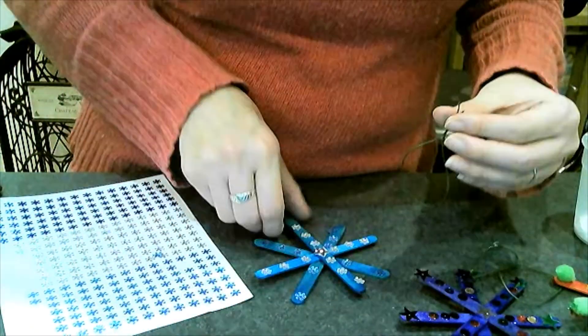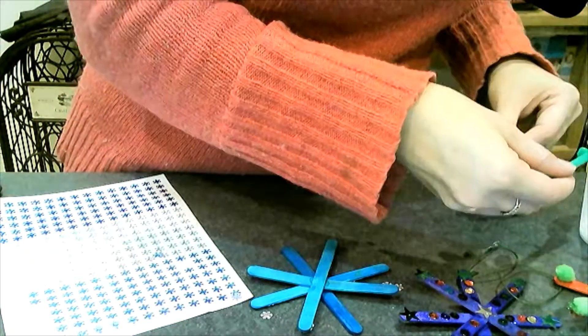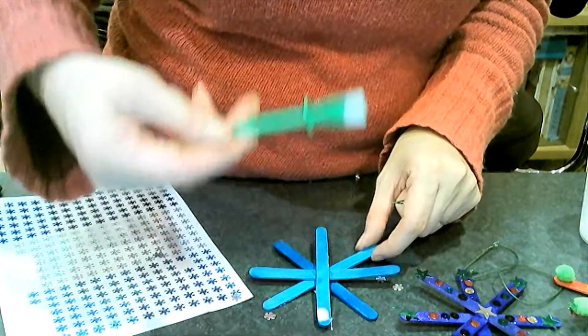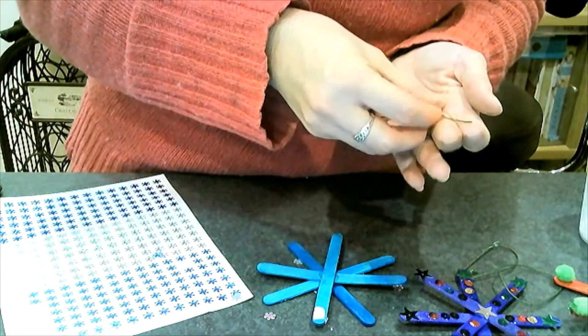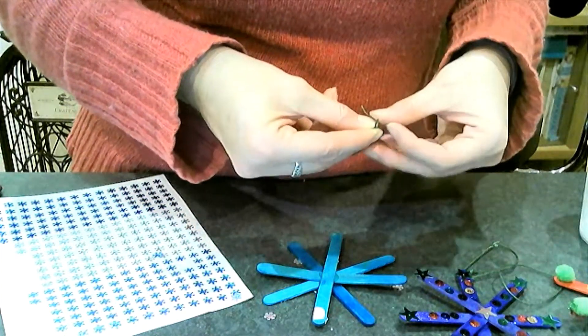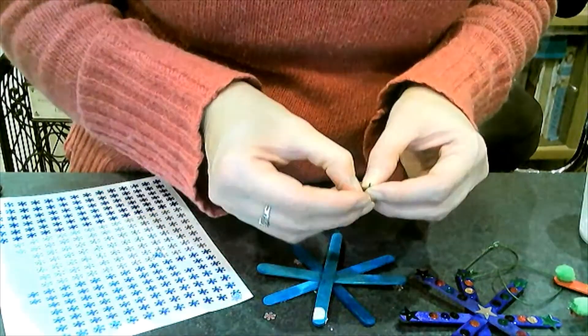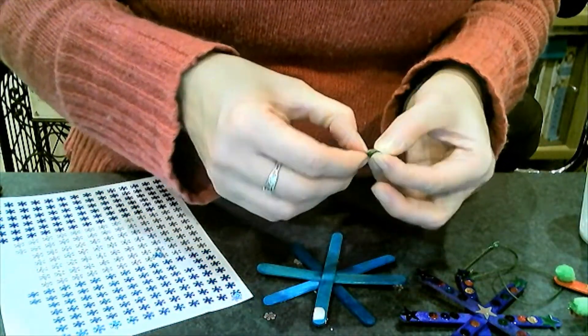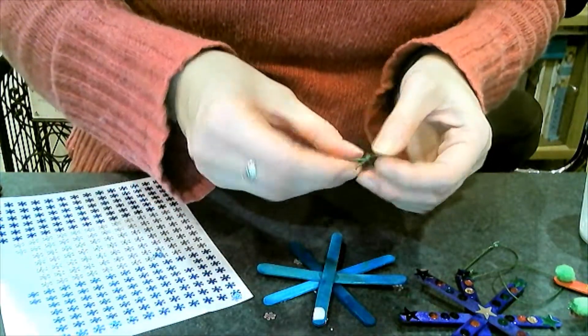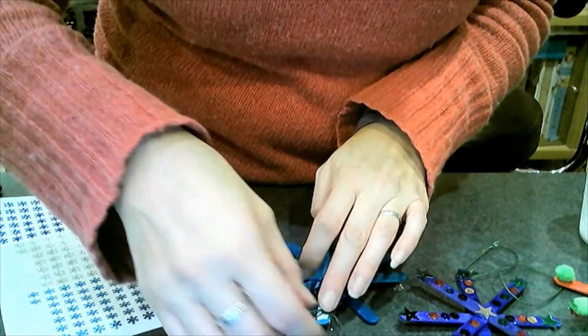So again, once everything's dry, just use plenty of glue. Tie a knot in my twine first - I've got a loop. And then just firmly press that down into the glue.